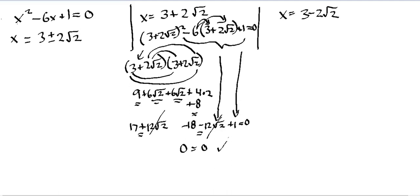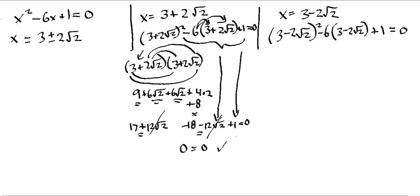Let's do the same for the second solution: x equals three minus two times the square root of two. This is a similar process, but it's not the same solution, so let's check it. Plugging into our original equation, we have three minus two times the square root of two, squared — substituting the value for x — minus six times three minus two times the square root of two, plus one equals zero. I'm not going to work in as much detail as I did in the first check; I'll take a shortcut in expanding three minus two times the square root of two, squared.